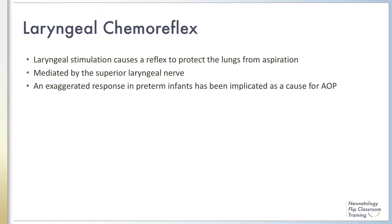Stimulation of the laryngeal mucosa causes inhibition of breathing and apnea, mediated by the superior laryngeal nerve. This reflex-induced apnea is called the laryngeal chemoreflex and is associated with glottic closure, swallowing, bradycardia, and hypotension. While protective of the lungs to prevent aspiration, this reflex can be exaggerated in preterm infants and lead to prolonged apnea. The mechanisms underlying this exaggerated response are unclear, but seem related to decreased central nervous system output or dominance of inhibitory neurotransmitters and pathways.